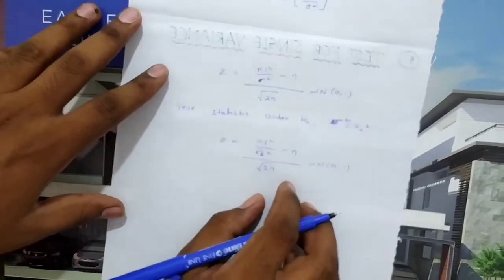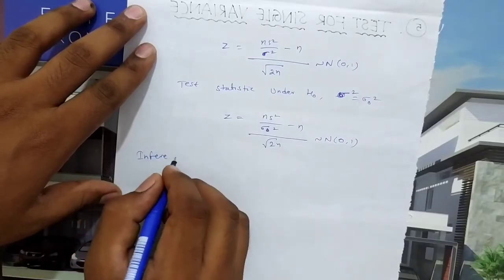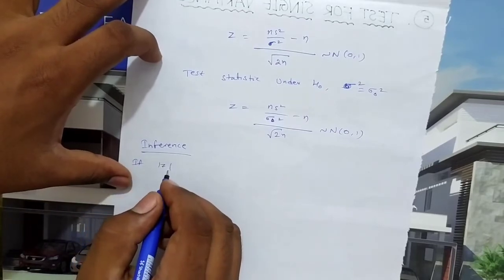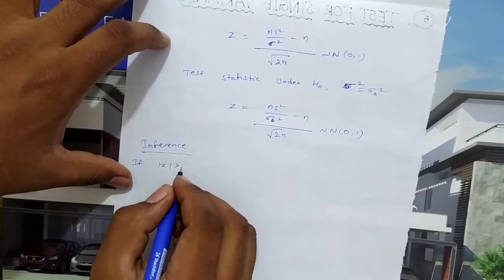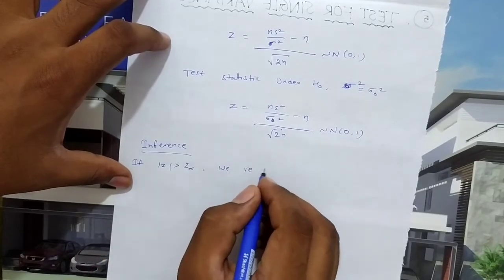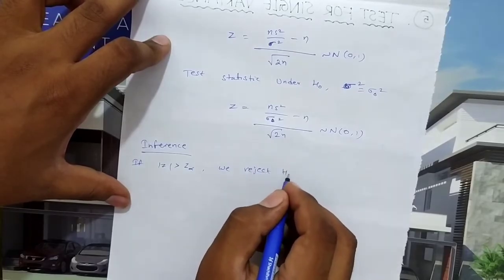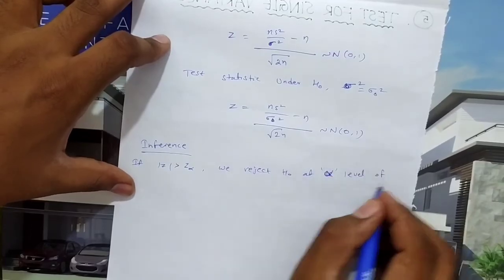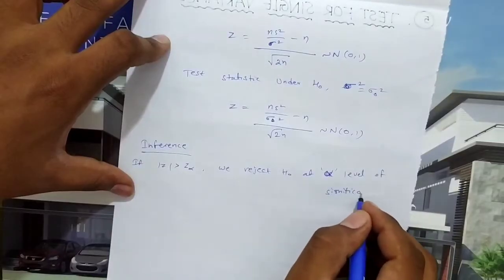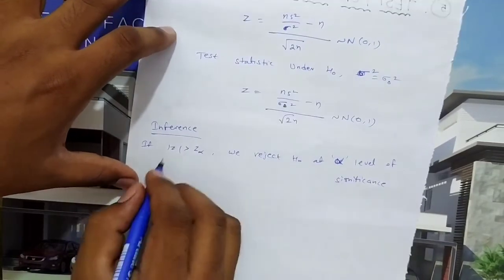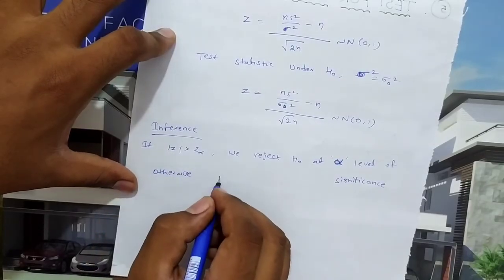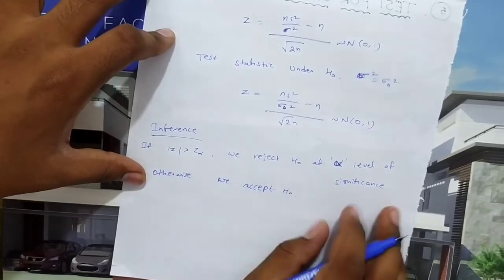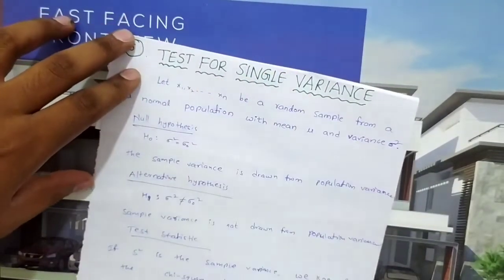Inference: If |Z| > Z_α, we reject H₀ at the α level of significance. Otherwise, we accept H₀. This is the test for single variance.